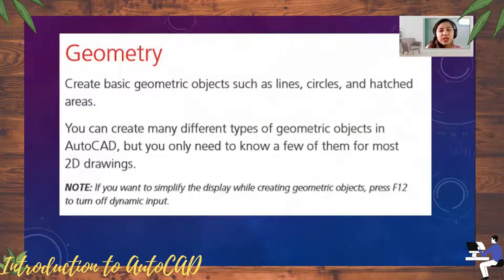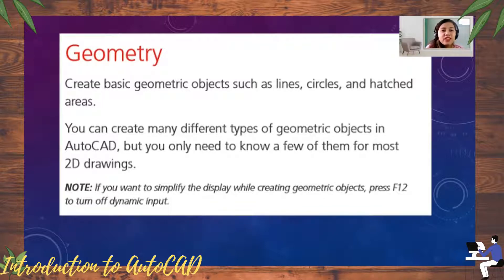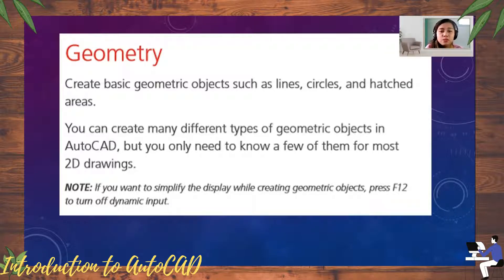We have geometry — this is used to create basic geometric objects such as lines, circles, and hatch areas. You can create many different types of geometric objects in AutoCAD, but you only need to know a few for most studio drawings. Note: if you want to simplify the display while creating geometric objects, just press F1 to turn off dynamic input.